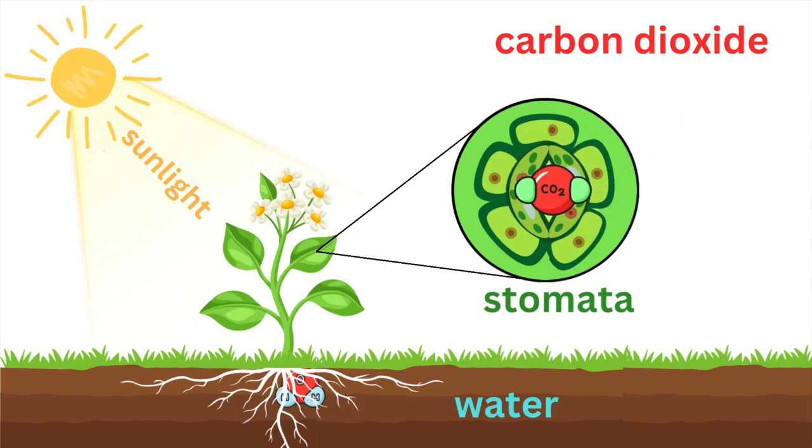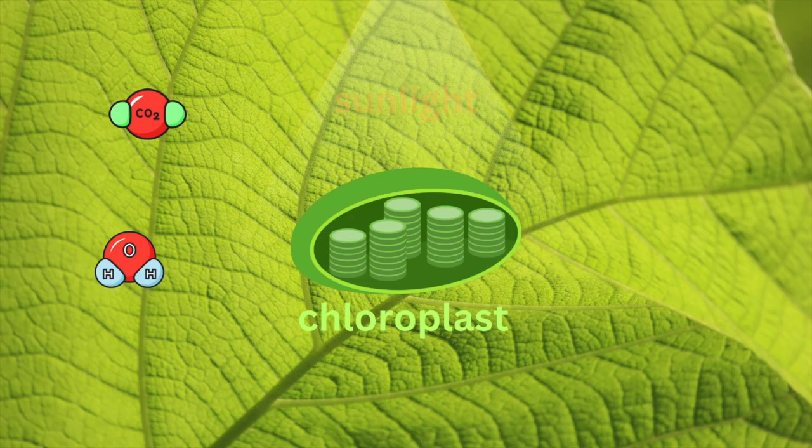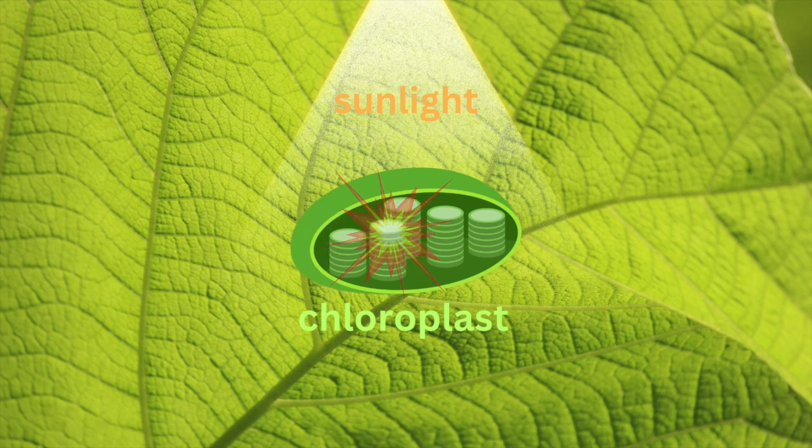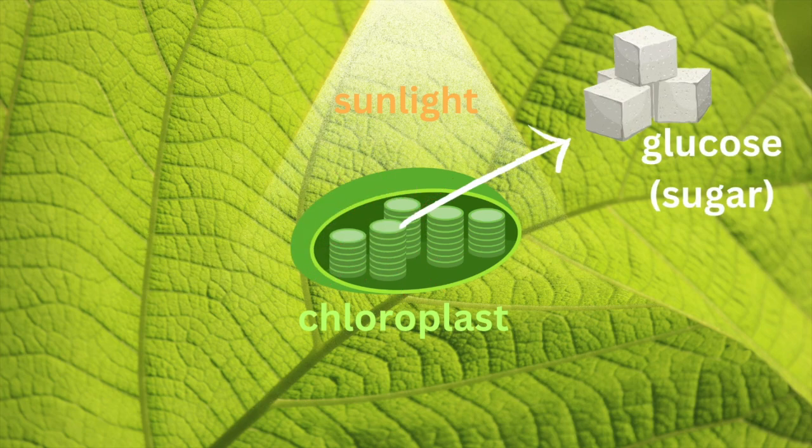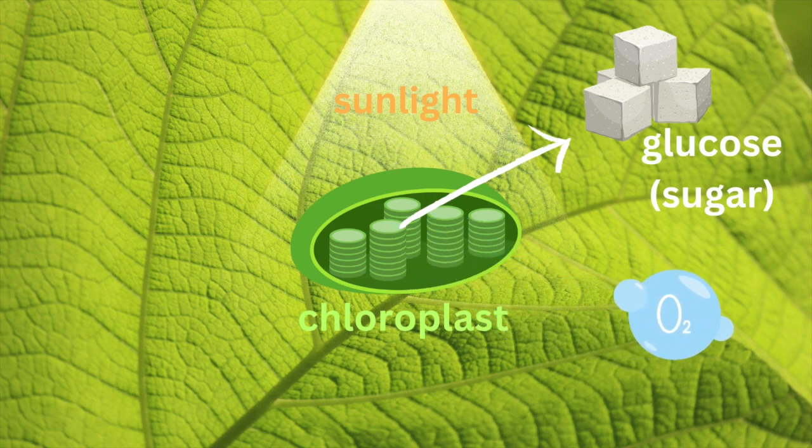So, what happens next? The chloroplasts use sunlight to power a chemical reaction between carbon dioxide and water. This reaction makes glucose, which is sugar that plants use for food, and it also releases oxygen into the air. That's right, plants give us the oxygen we breathe.